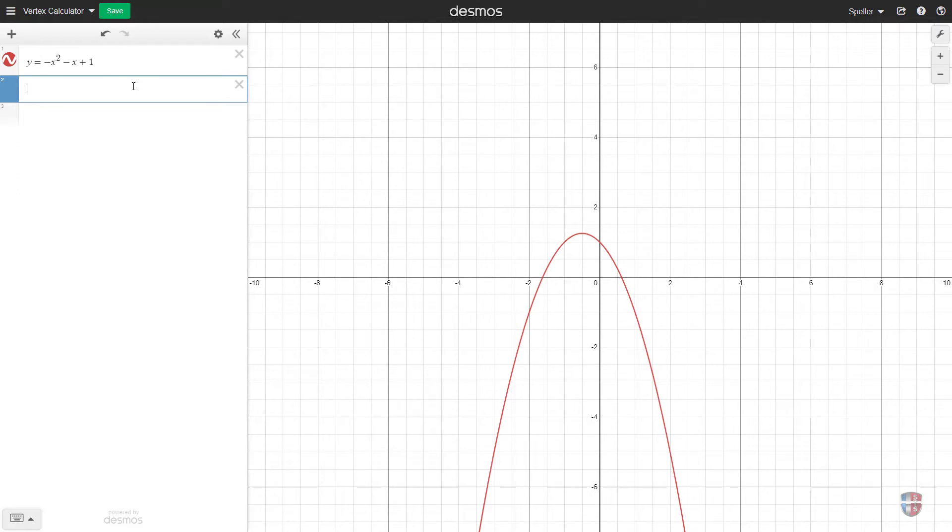We're going to use the variable a equals, b equals, and c equals. I'm using those variables because that's what we normally see when we see a quadratic equation in standard form.